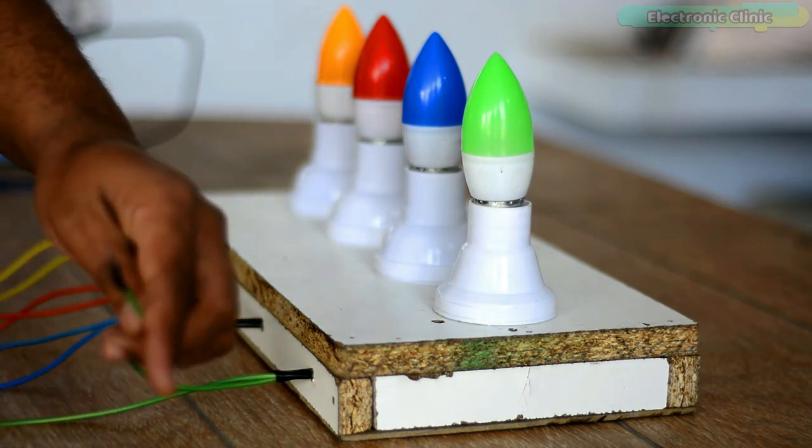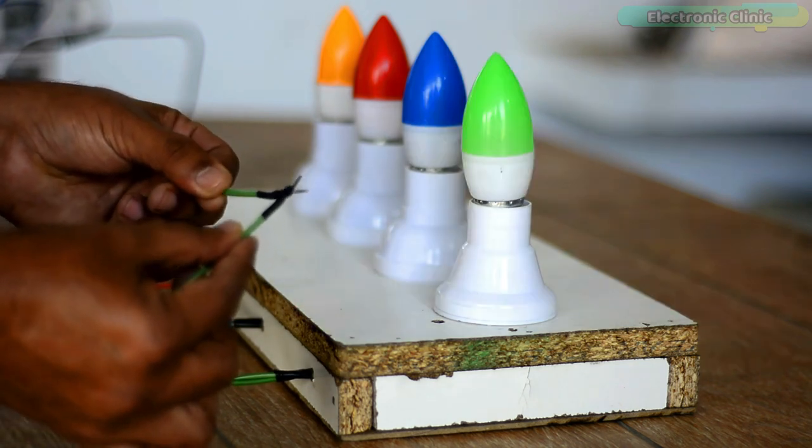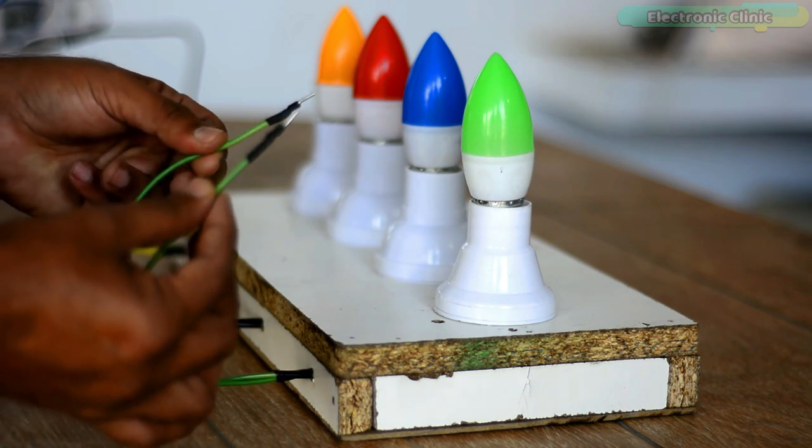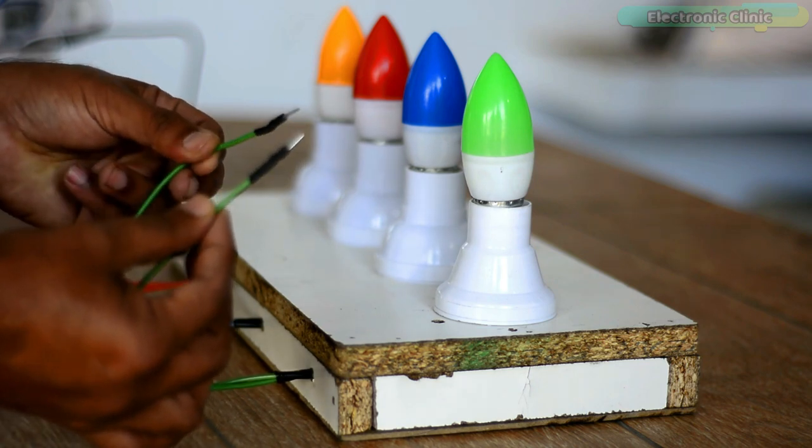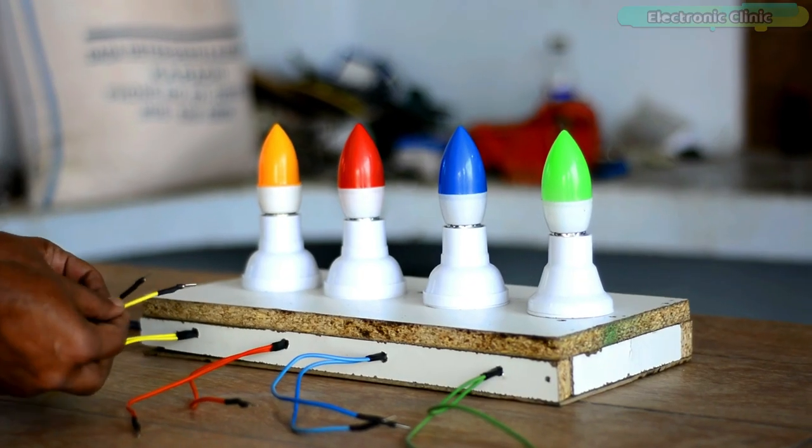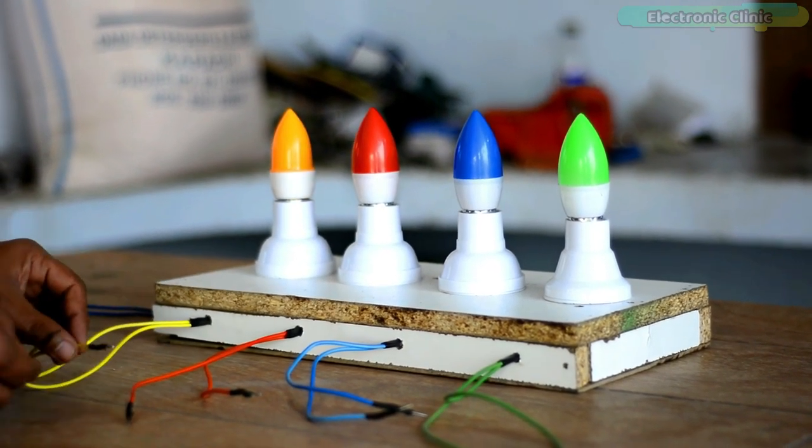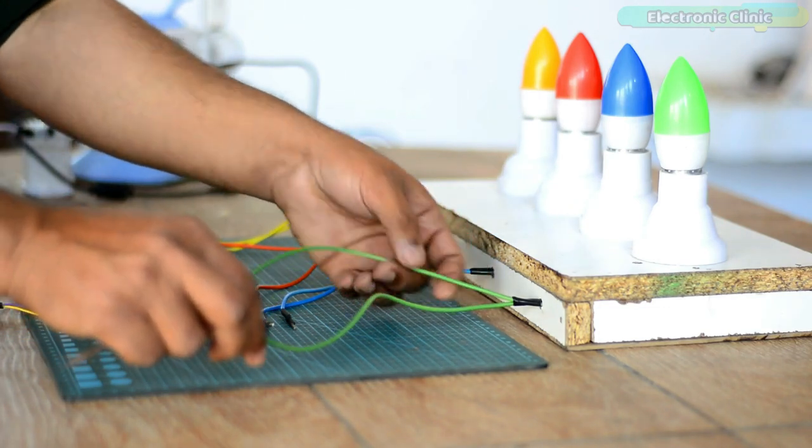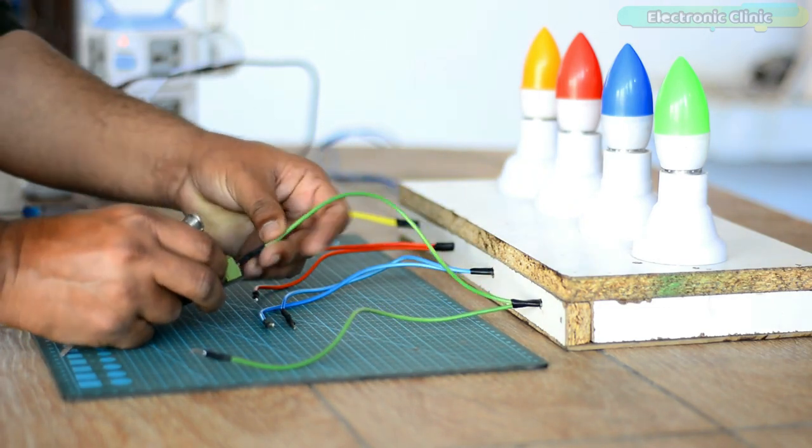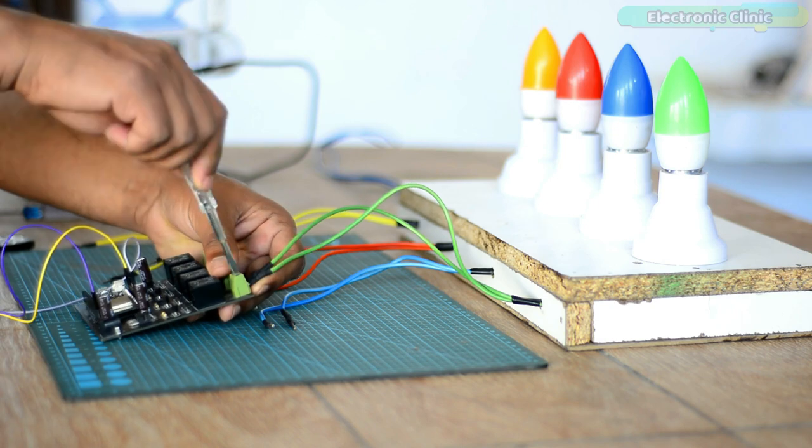Anyways, before connecting all the four lights with the relays first I checked all the four lights. And by the way, be very careful while working with 220 volt AC because it can be really dangerous. After checking all the four lights I disconnected the 220 volt AC supply and I started connecting all the four lights with the relays. Don't worry, I will explain all the connections with the help of a circuit diagram.